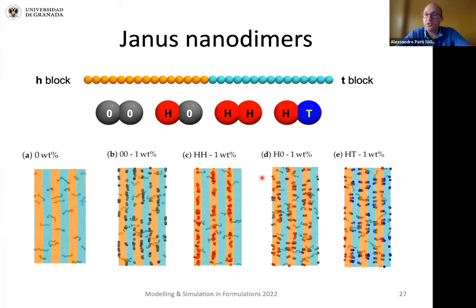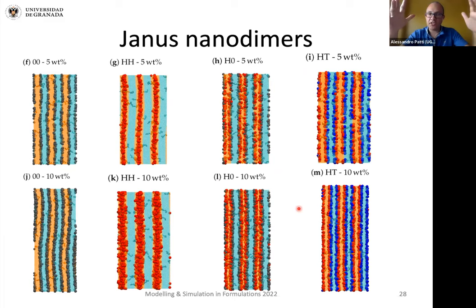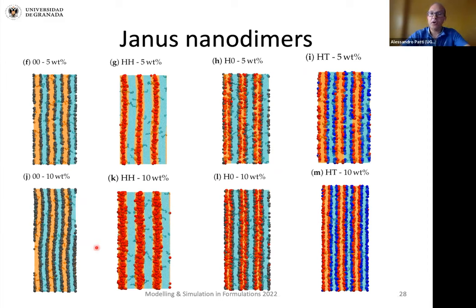Depending on what our interest is, we can tune these interactions to design different nanoparticles and have them in precise locations. If we increase concentration, the tendencies are basically the same — up to 10% by weight, nanoparticles are able to maintain the same mesophase ordering so that the lamellar order is not disrupted. There can be some frustration in the lamellar phases, but the order is maintained; the system just becomes more crowded.